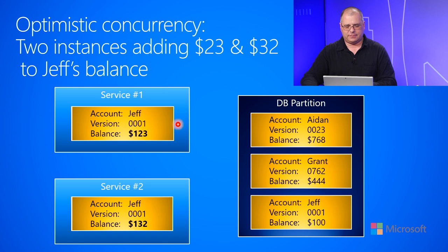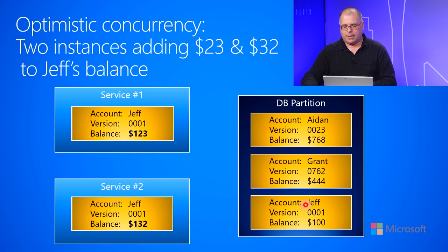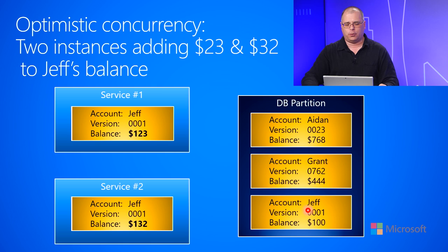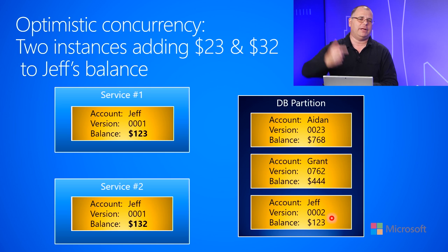Both of these services are going to send the change back into the database, and they are sending back the whole record, which includes the version or e-tag information. Let's say service one sends the information first. The database says: you had version one, and I have version one — so since I have version one and you had version one, that means this information is based on the version I had. So I will accept your $123. The balance becomes $123 and the version number is incremented to two.